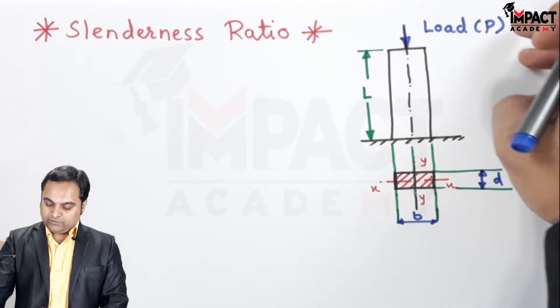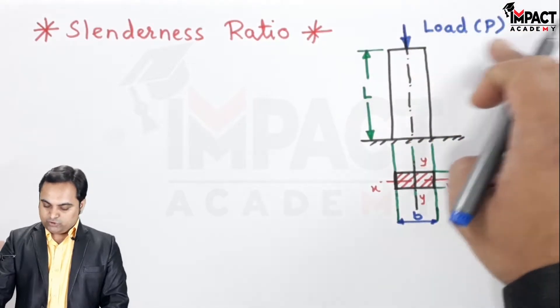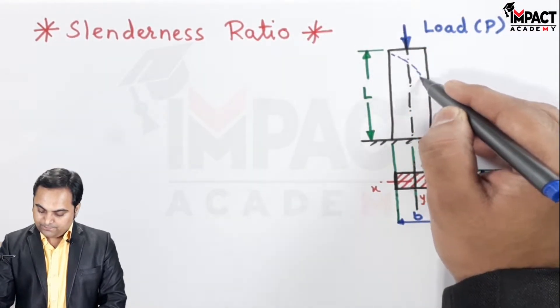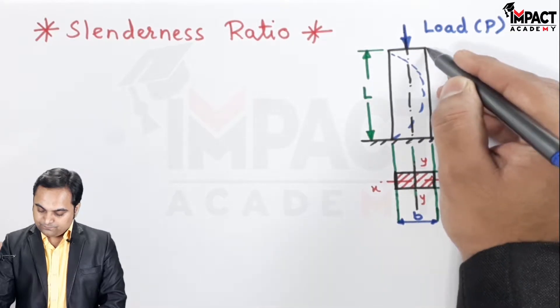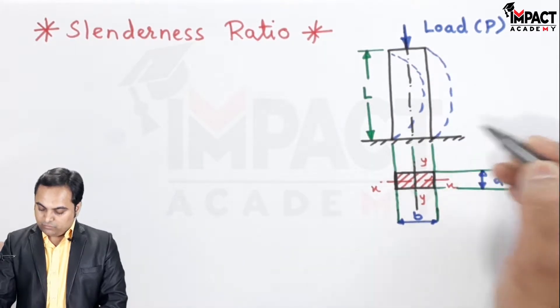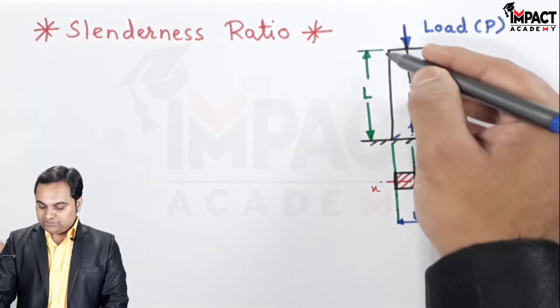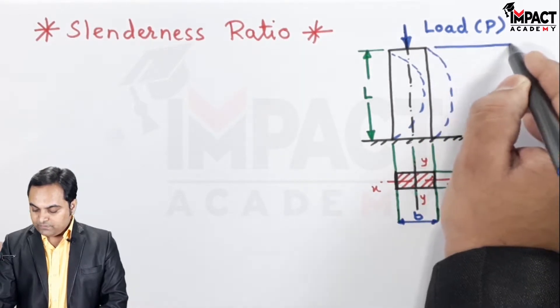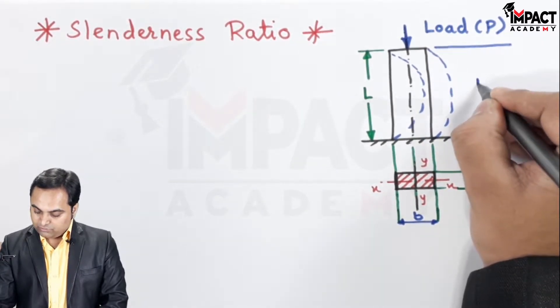Under the action of the axial load which is load P, the column is going to buckle. And whatever is the length of the column which is bending, that length is called the effective length of the column.